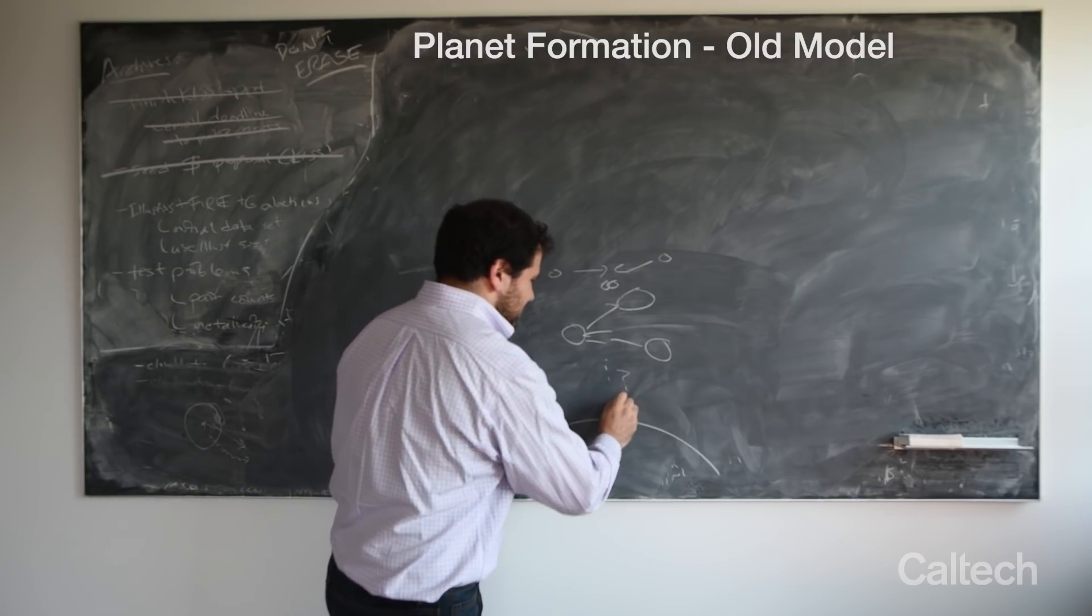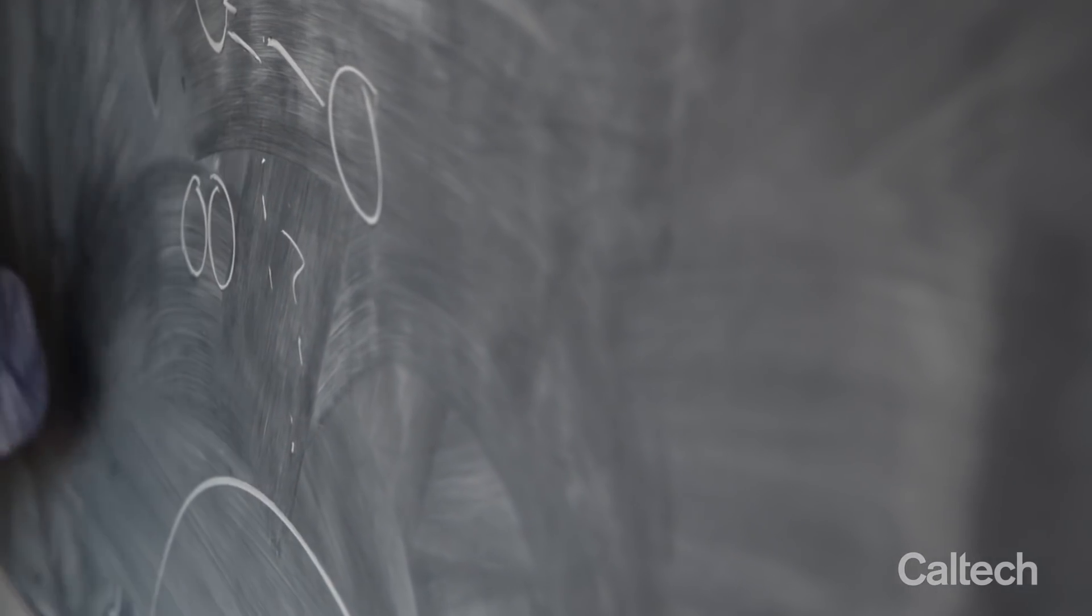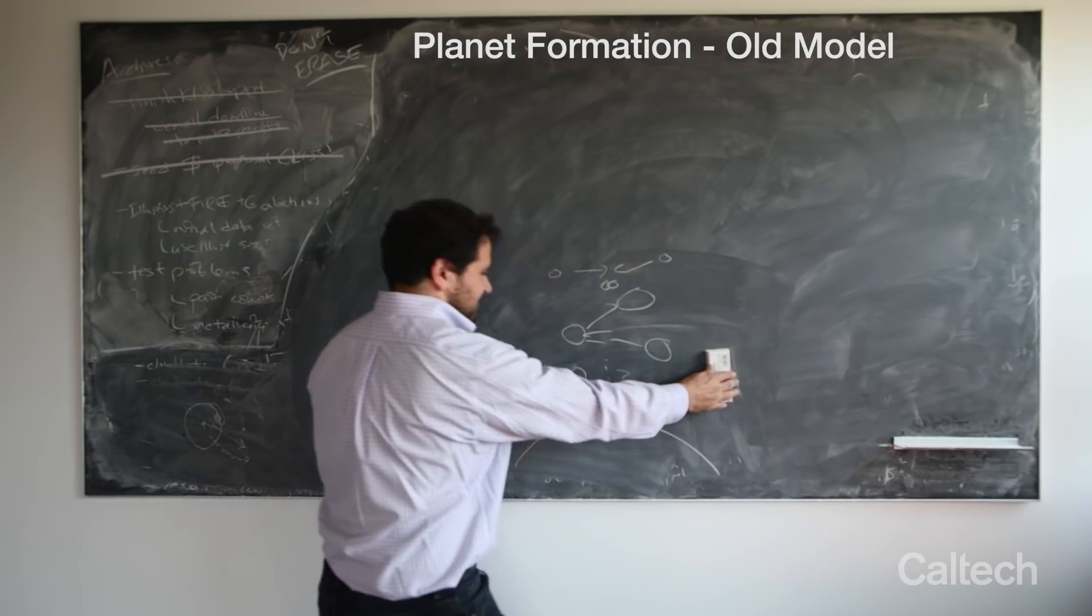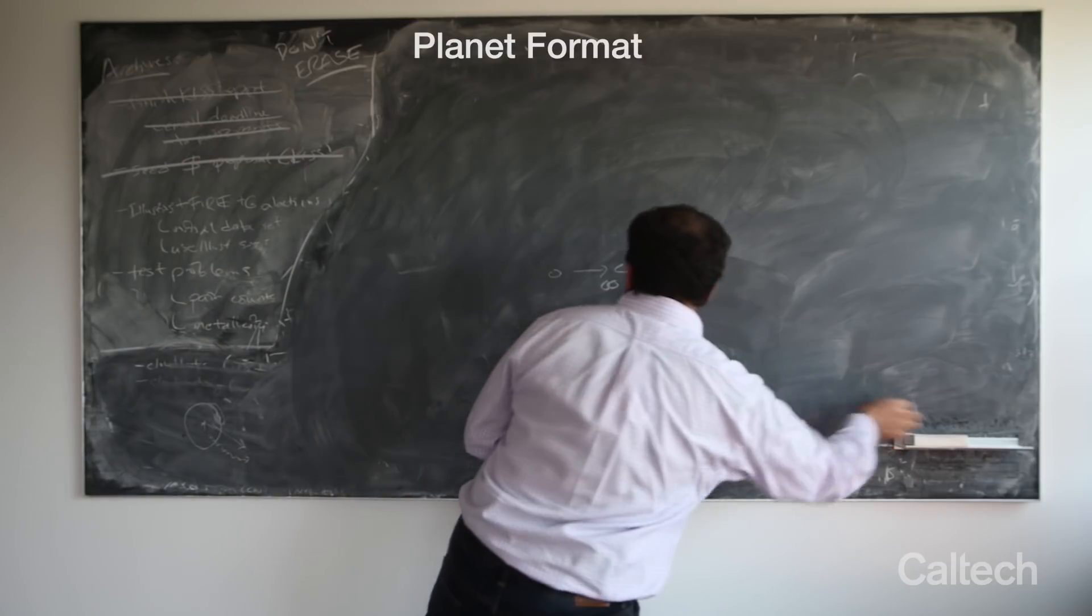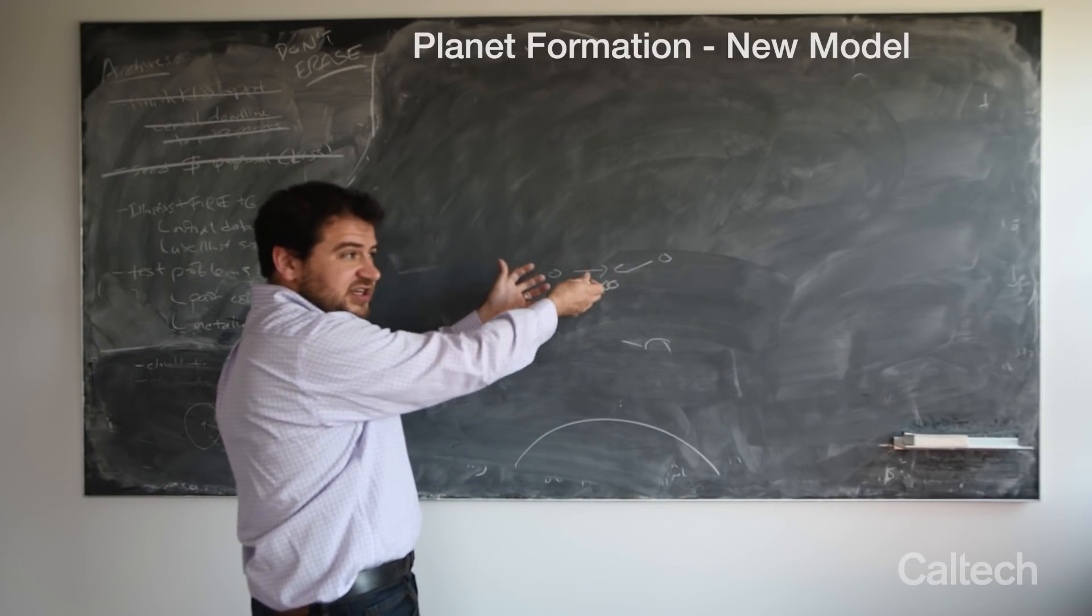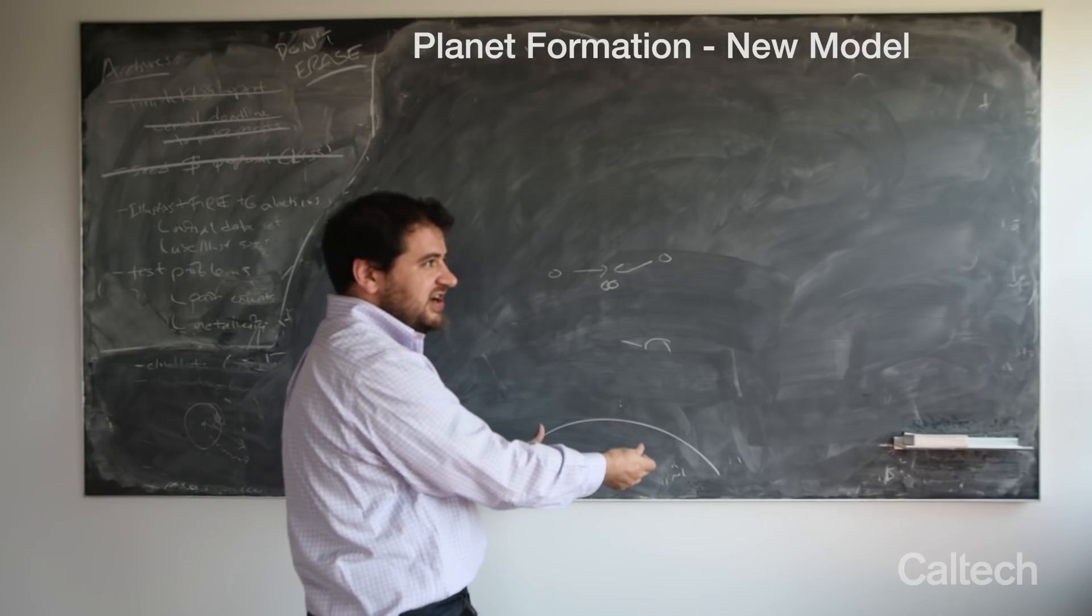And everything in between here is just a big mystery. In the new picture, none of this in the middle actually happens. And the idea is that you just skip basically from these tiny dust grains all the way to this giant object.